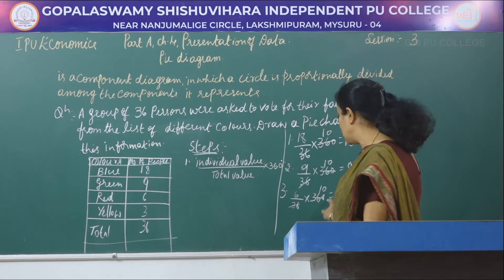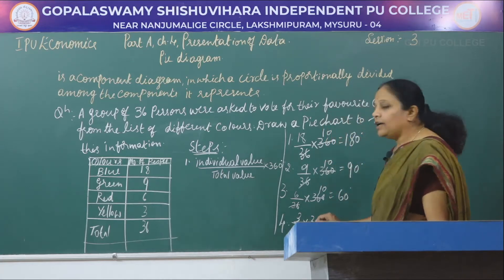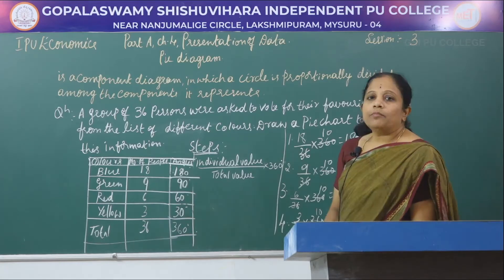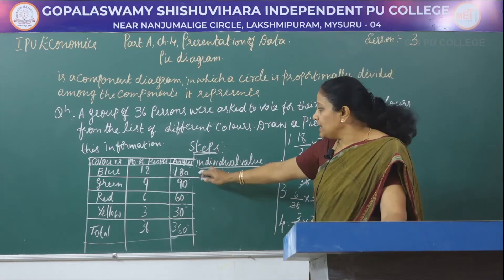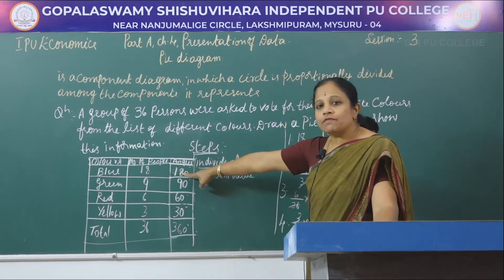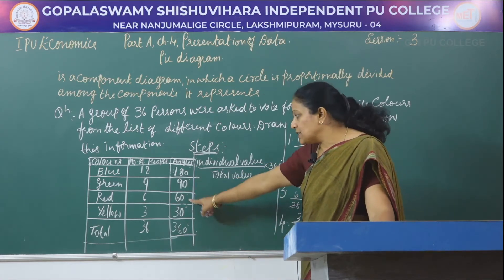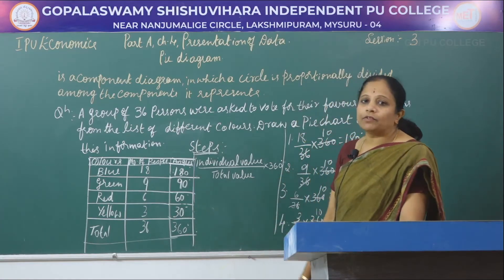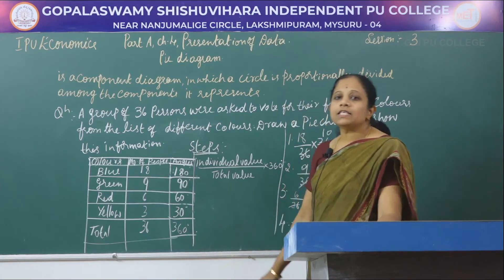The central angle of red color is 60 degrees. The fourth one is 3 divided by 36 into 360 — 360 by 36 is 10, so it is 30 degrees. Before we move towards the construction of the pie diagram, let us verify the angles: blue is 180 degrees, green is 90 degrees, red is 60 degrees, and yellow is 30 degrees. If we add all four angles together, we get 360 degrees, which completes the circle.